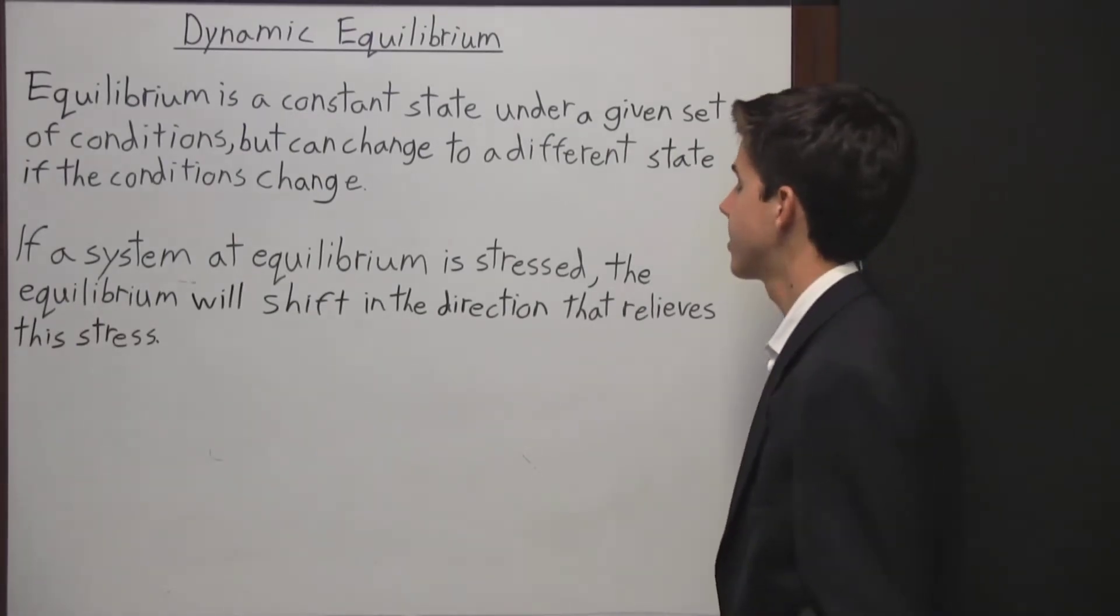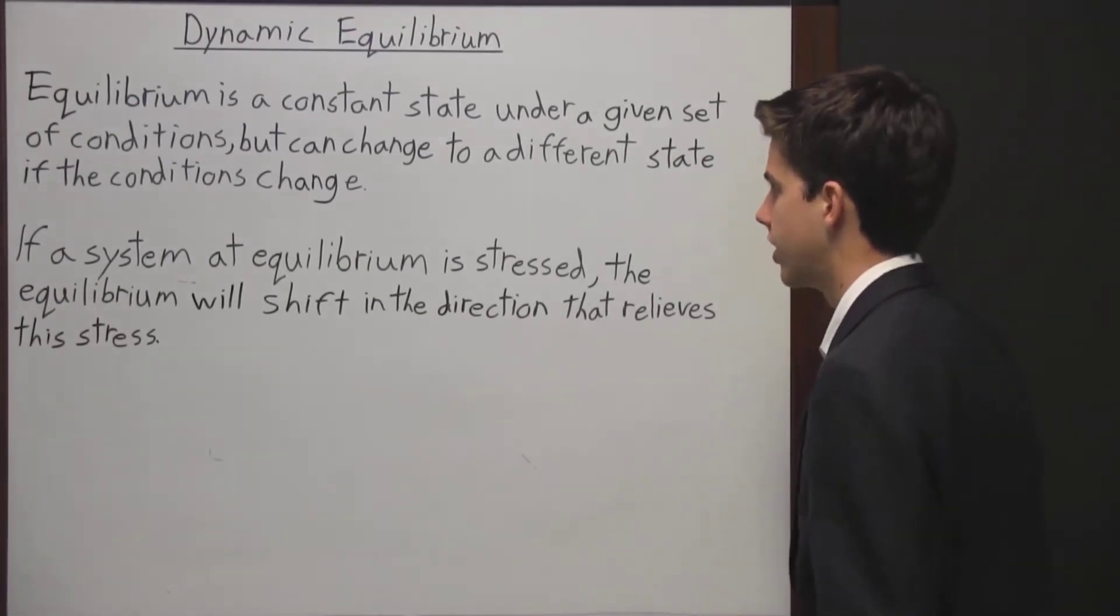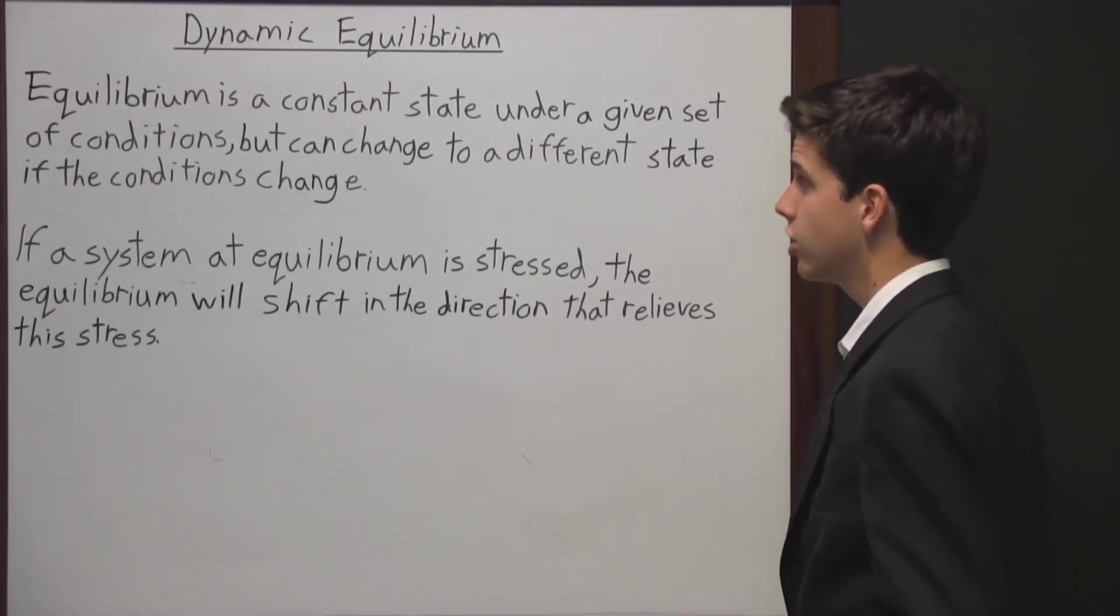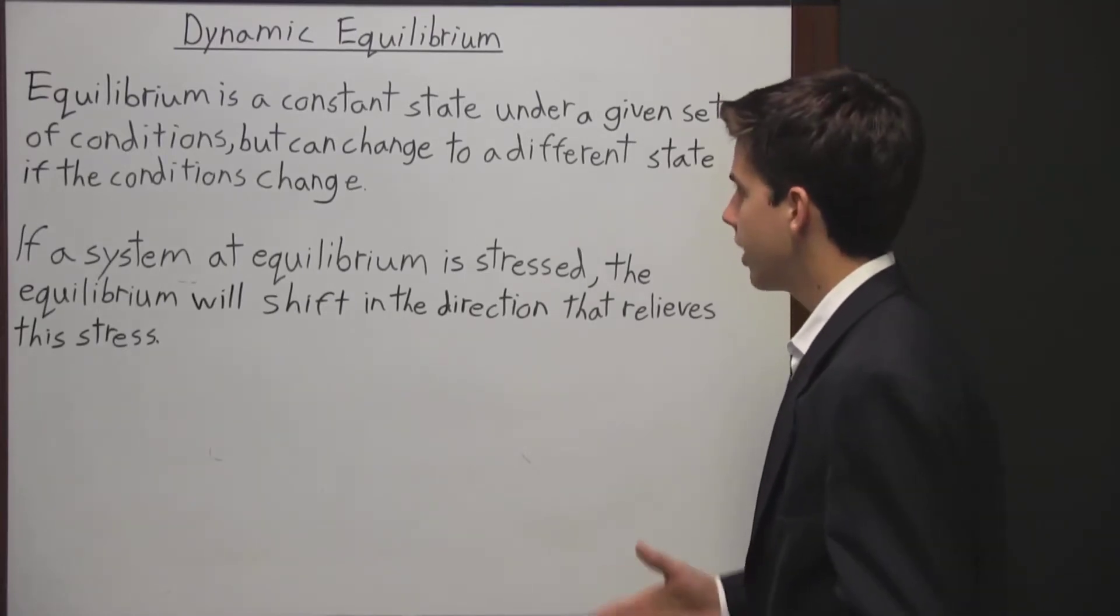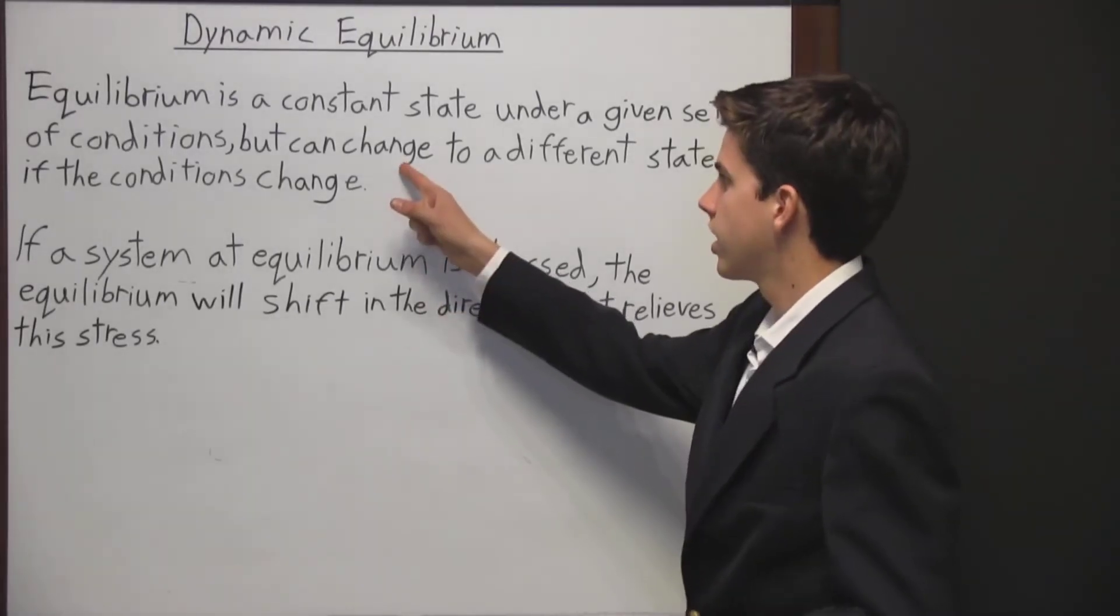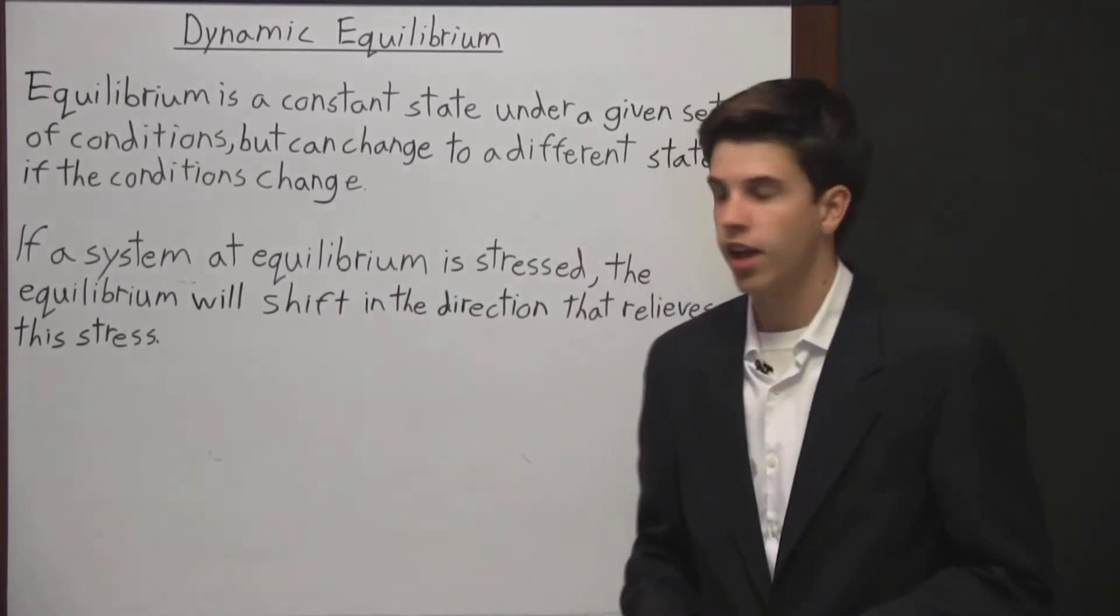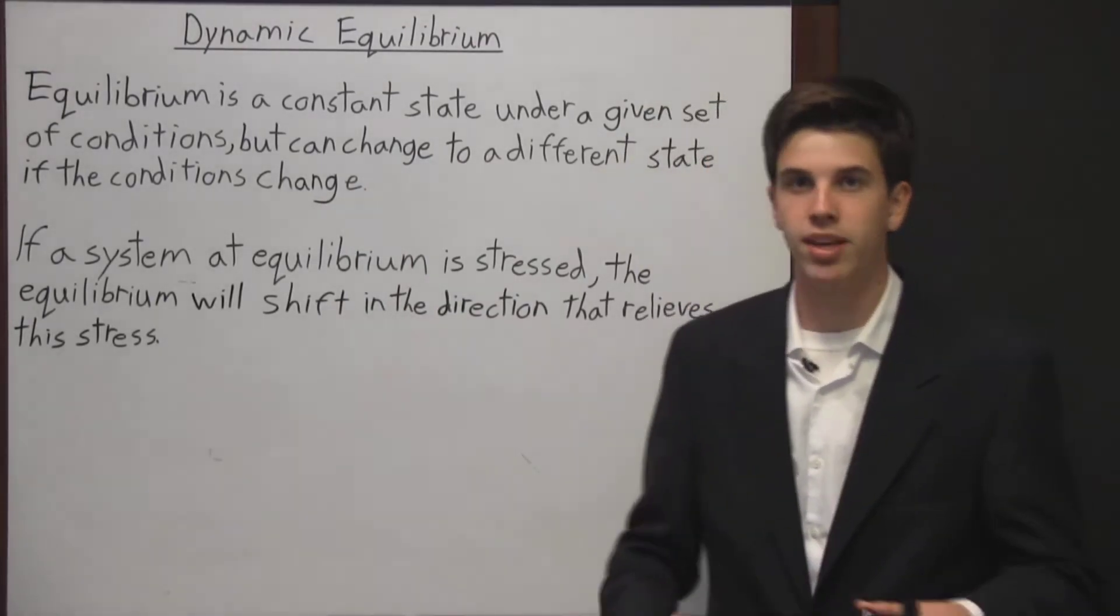Equilibrium is a constant state under a given set of conditions, but can change to a different state if the conditions change. Notice that equilibrium can change if the conditions change, and that's why we call this dynamic equilibrium.